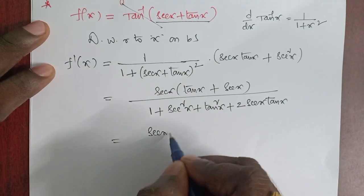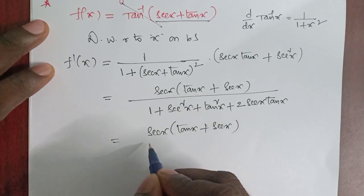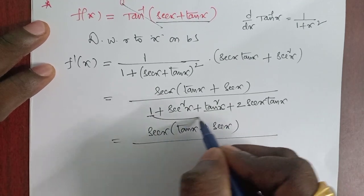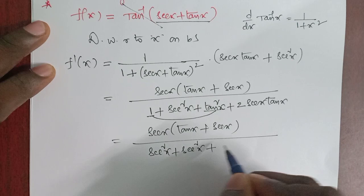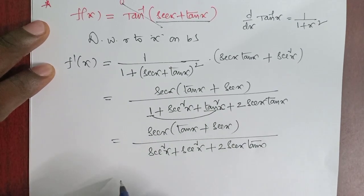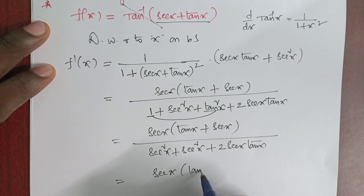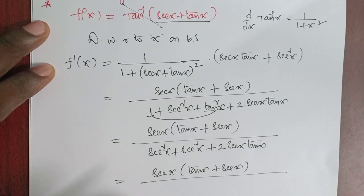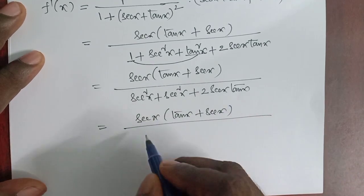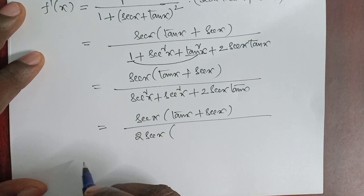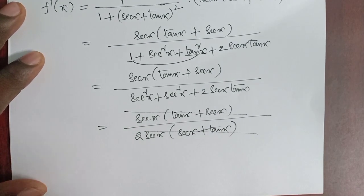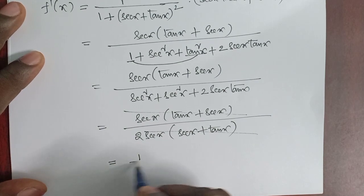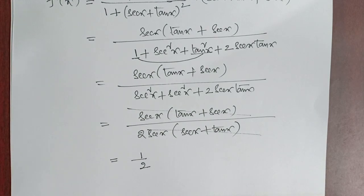In the numerator, sec x is common, giving sec x(tan x + sec x). In the denominator, using 1 + tan²x = sec²x, we get 2sec²x + 2 sec x tan x = 2 sec x(sec x + tan x). The (sec x + tan x) terms cancel, leaving the final result as 1/2. This completes the inverse trigonometric type.